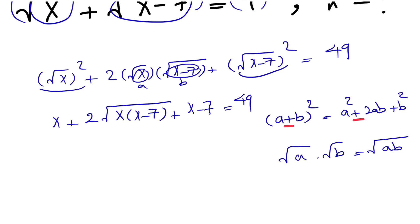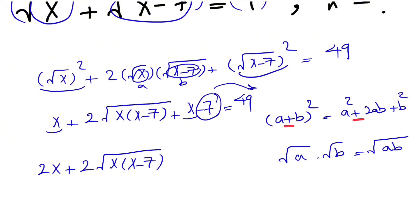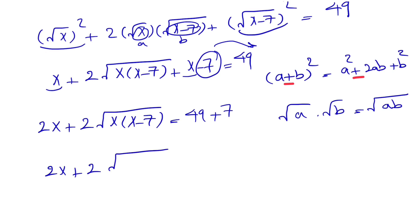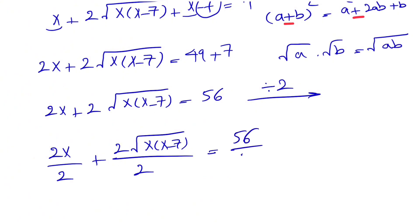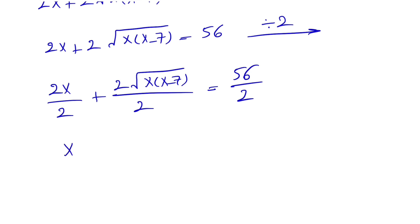We have 2x here. So we have 2x plus 2 times the square root of x times (x minus 7). We can bring the minus 7 to the other side of the equation, giving us 49 plus 7. So we have 2x plus 2 times the square root of x(x minus 7) is equal to 56. Now we can divide each side of the equation by 2, giving us x plus the square root of x(x minus 7) is equal to 28.